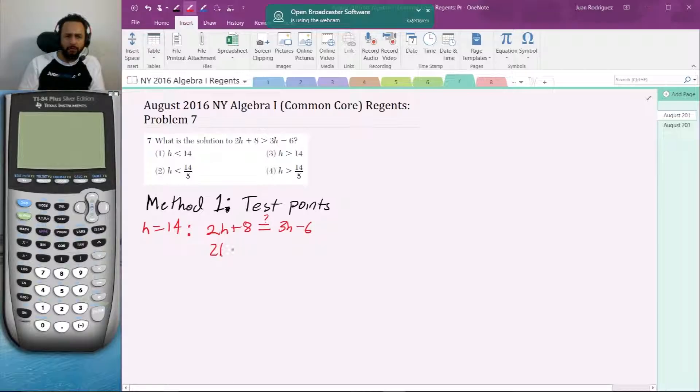So 2H plus 8, I'm going to test for equality. 3H minus 6. So 2 times 14 plus 8 equals 3 times 14 minus 6. And in fact you get 28, plus 8 is 36.